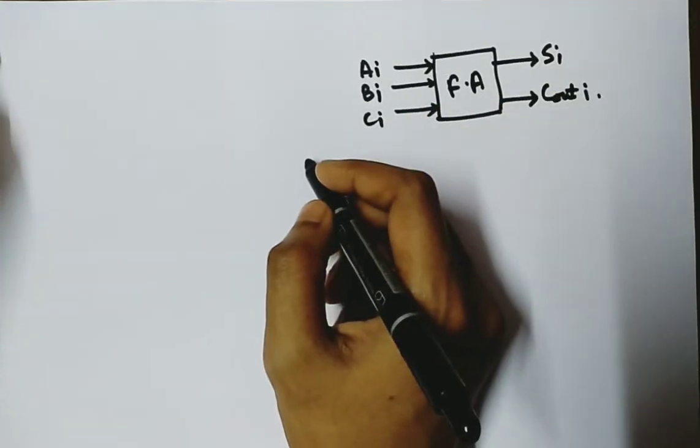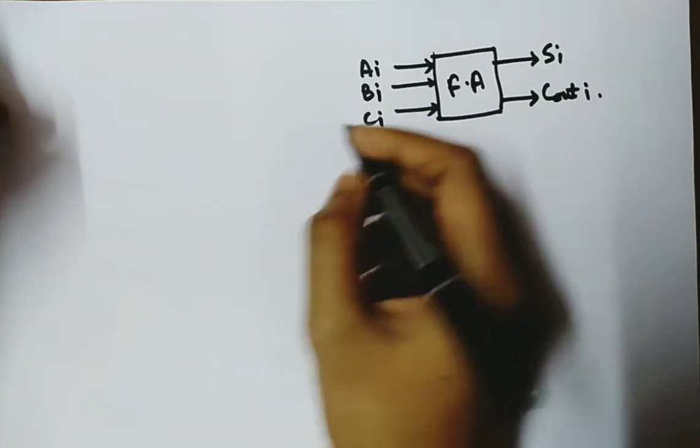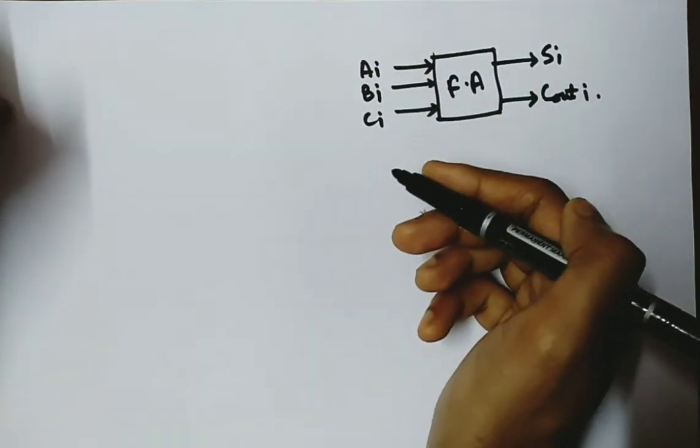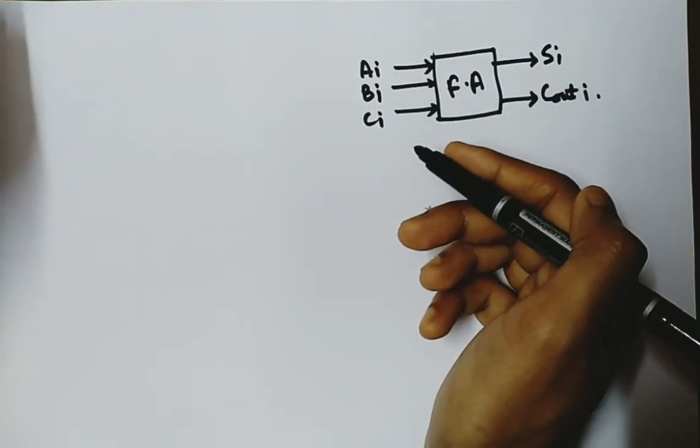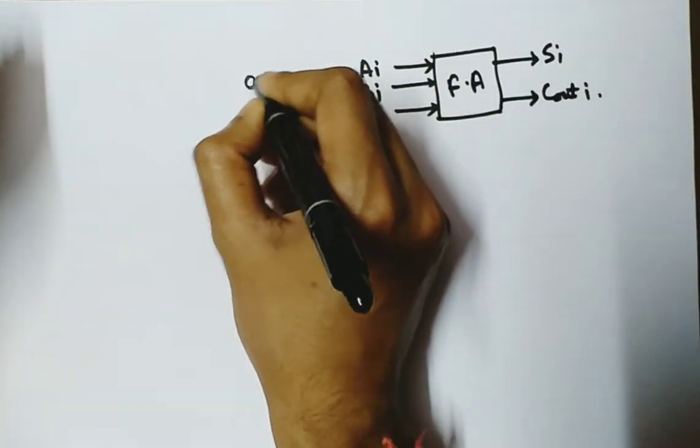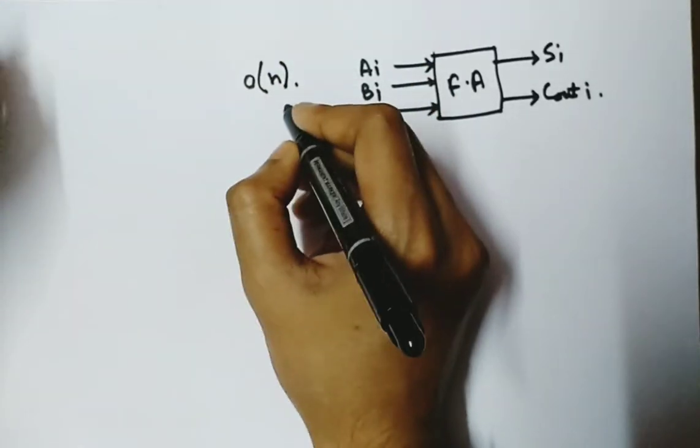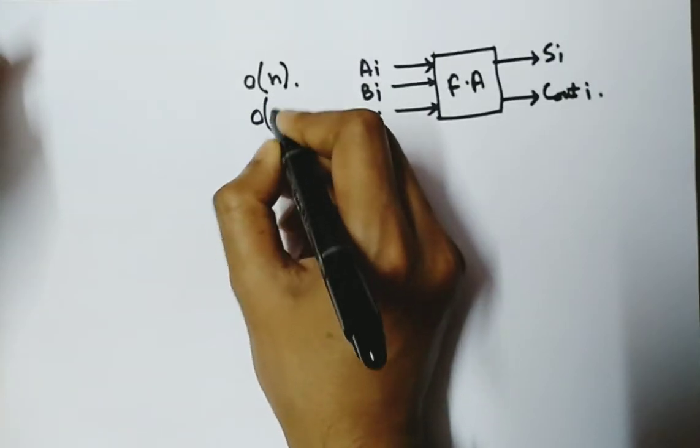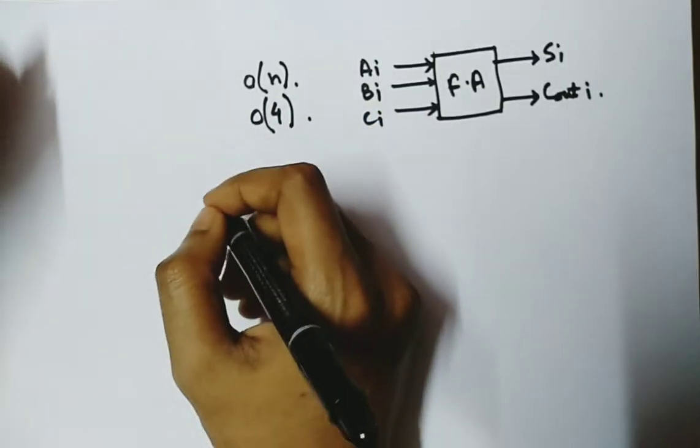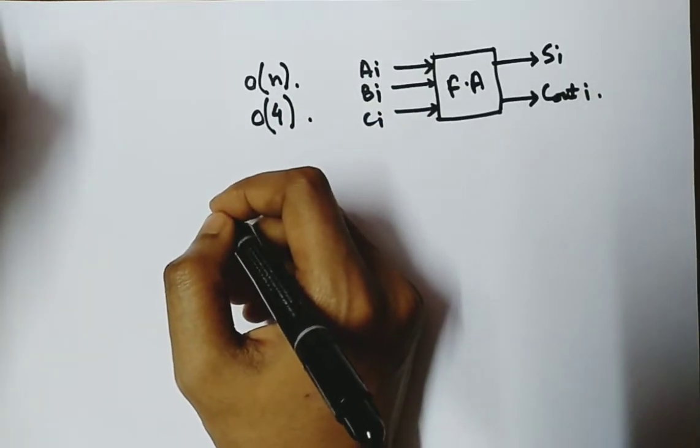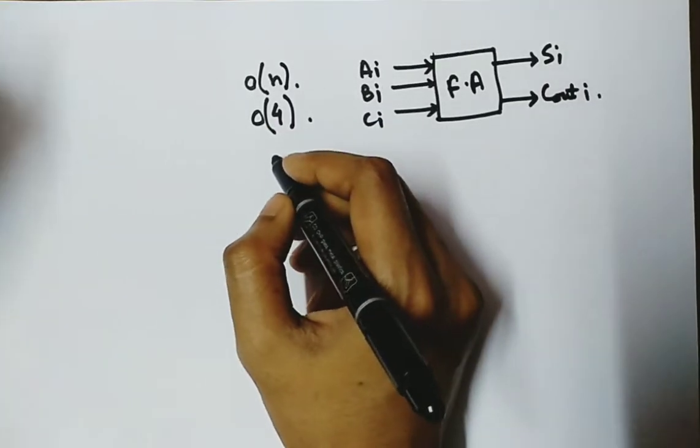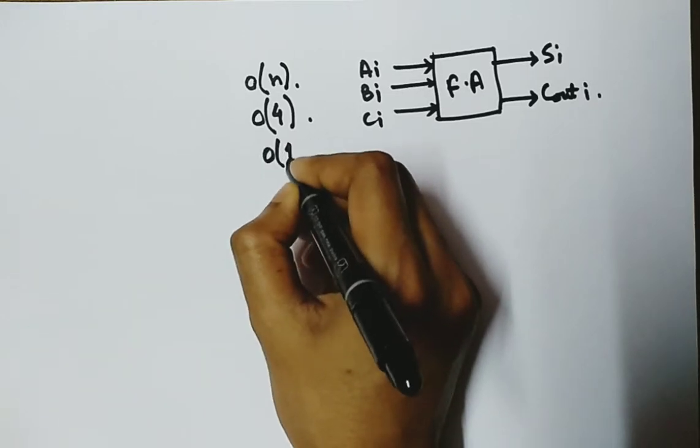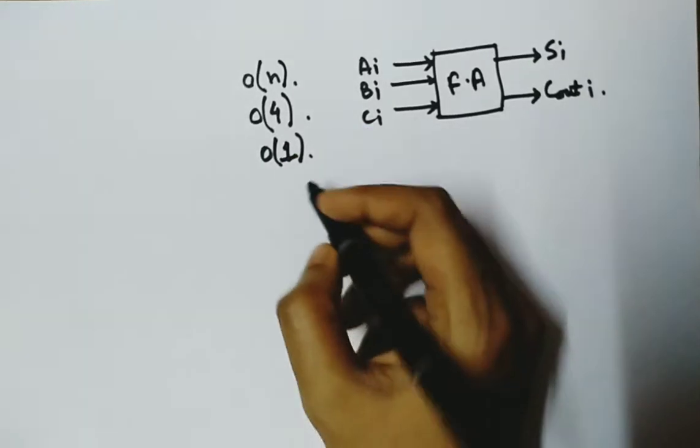Now in a ripple carry adder, the input carry propagates through all the stages of the adder, and so the computational time required is big O of n. For a 4-bit adder, the computational time required is big O of 4. For a carry look-ahead adder, the time complexity is big O of 1, so much less time is taken.